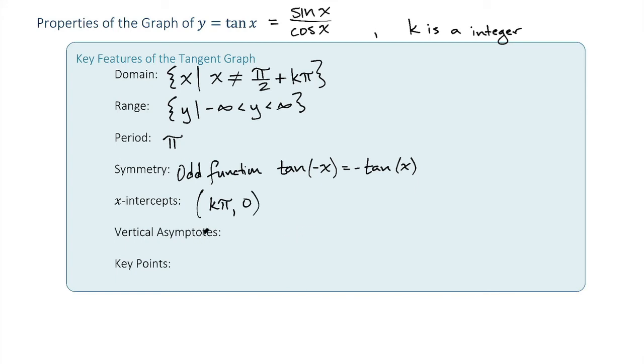The vertical asymptotes occur at these places that are cut out of the domain. So our vertical asymptotes are x equals pi over 2 plus any multiple of pi.